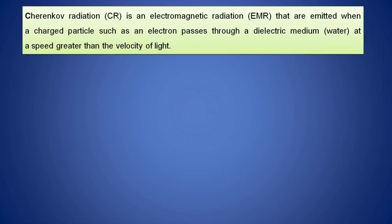What is Cherenkov radiation? Cherenkov radiation is an electromagnetic radiation that is emitted when charged particles, such as electrons, pass through a dielectric medium like water at a speed greater than the velocity of light in that medium. Whenever an electron travels through a denser or dielectric medium like water whose velocity is greater than the velocity of light, it emits electromagnetic radiation called Cherenkov radiation. Cherenkov radiation happens only when the velocity of the electron is greater than the velocity of light.